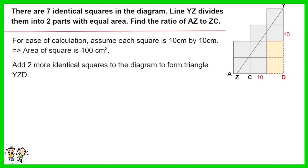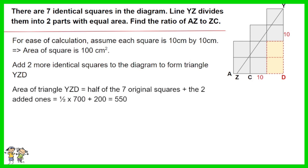Add two more identical squares to the diagram to form triangle YZD. Area of triangle YZD equals half of the seven original squares plus the two added ones, which equals half of 700 plus 200, which is 550.